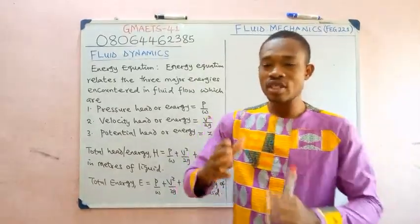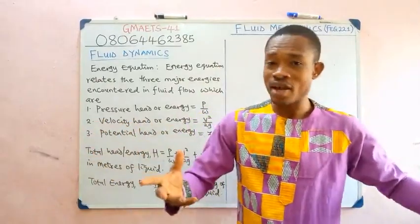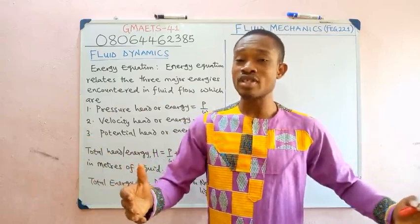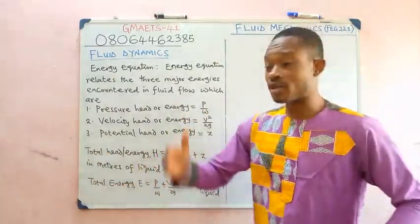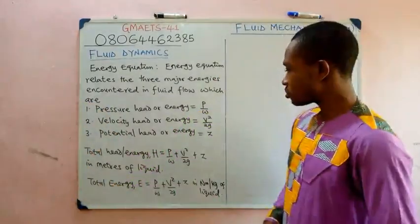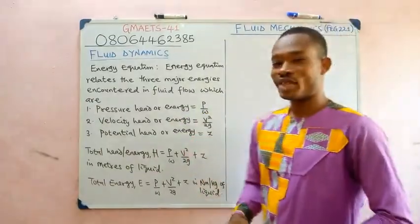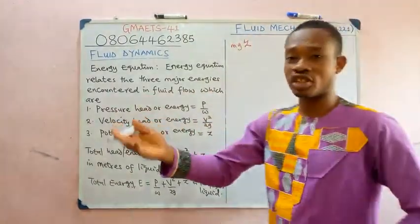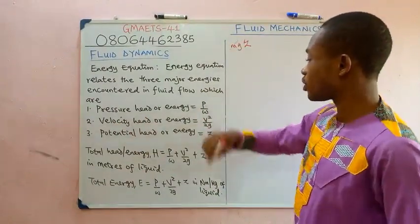The reason there is no mass is that when fluid flows from one section to another in a pipe, the inlet mass and the outlet mass are equal — mass flow rate is constant, so mass cancels out of the equation. Potential energy is Z; we used to know it as MgZ (or Mgh, where Z represents height), but since mass is constant on both ends it drops out.